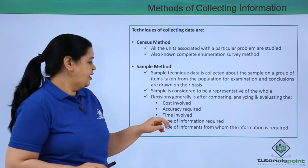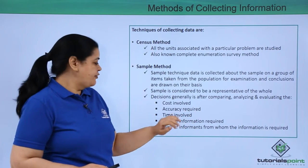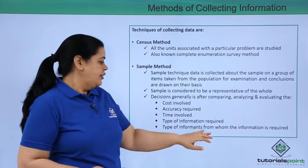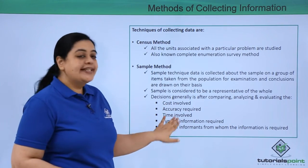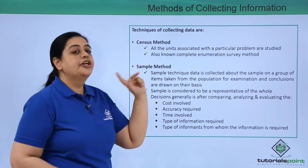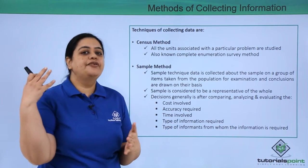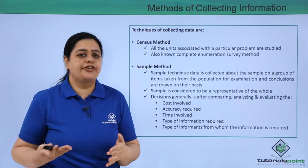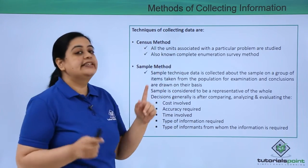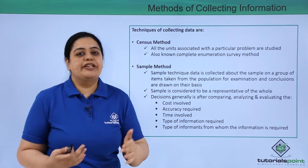The decision between census and sample method is generally made after comparing and evaluating: the cost involved, accuracy required, time involved, type of information required, and type of informants from whom the information is required. For example, if you need to be absolutely sure about your findings, you would prefer the census method over the sample method.